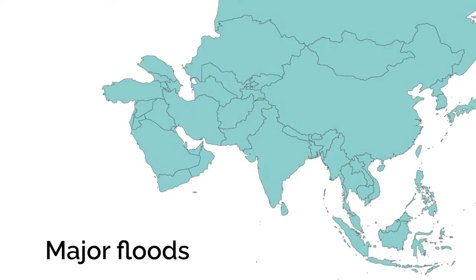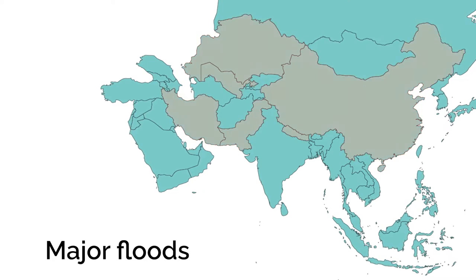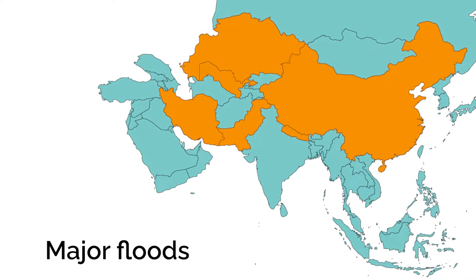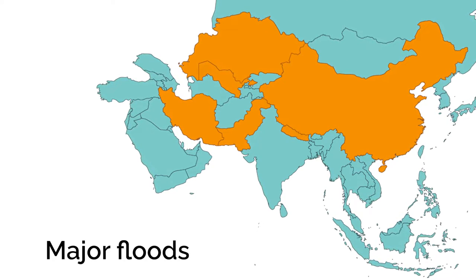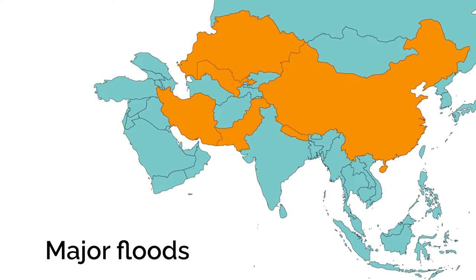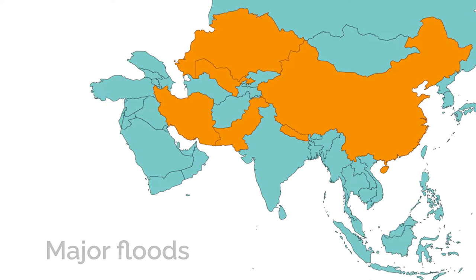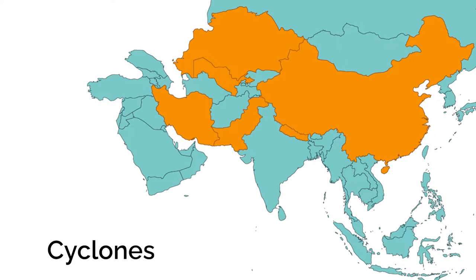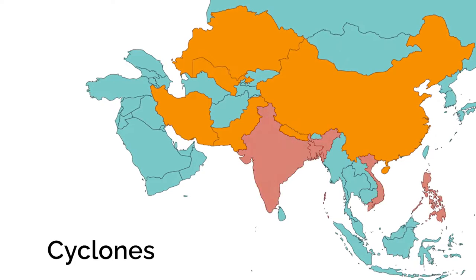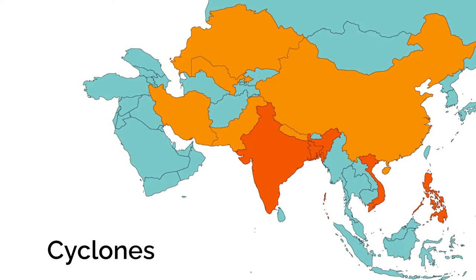Asia, for instance, has experienced numerous significant disasters during the COVID-19 pandemic. There have been major floods in China, India, Kazakhstan, Pakistan, Uzbekistan, Iran and Nepal. At the same time, large cyclones have affected the Philippines, Vietnam, Bangladesh and India.